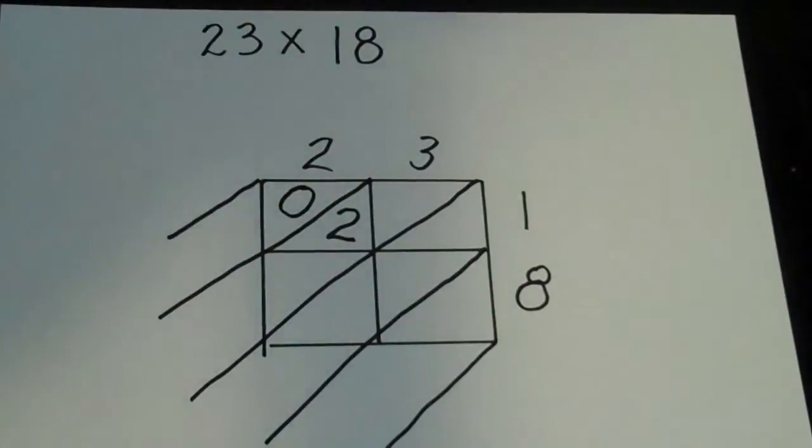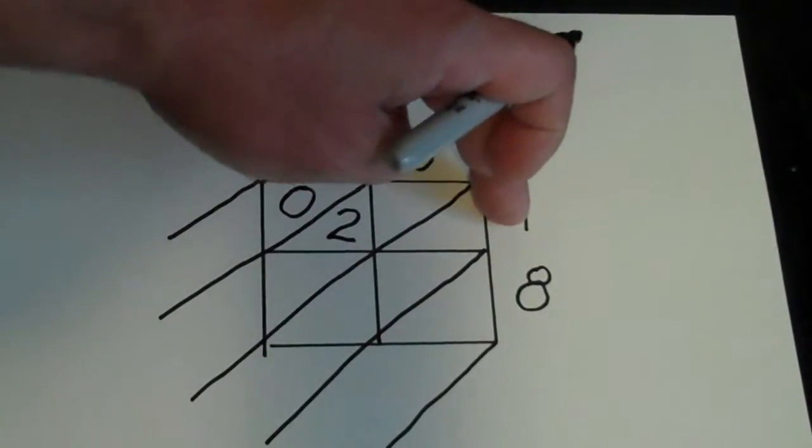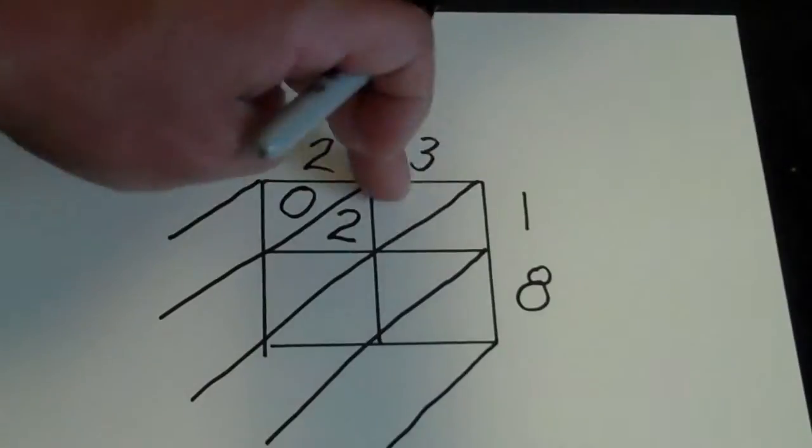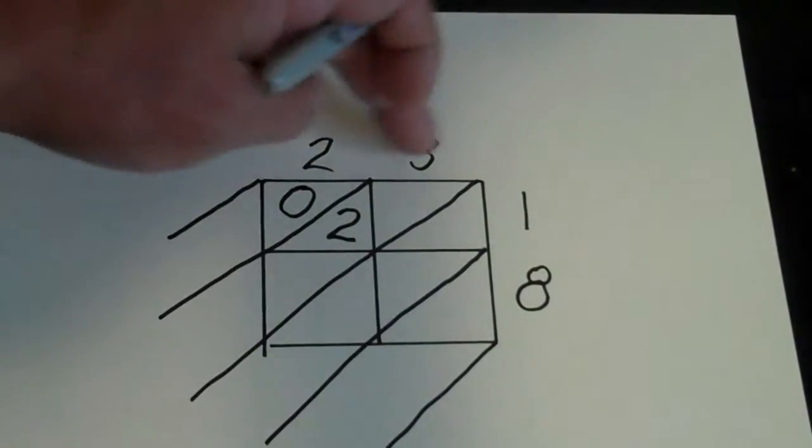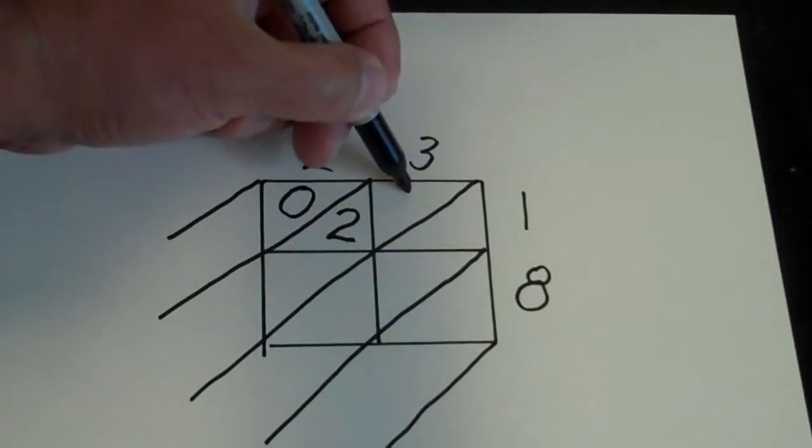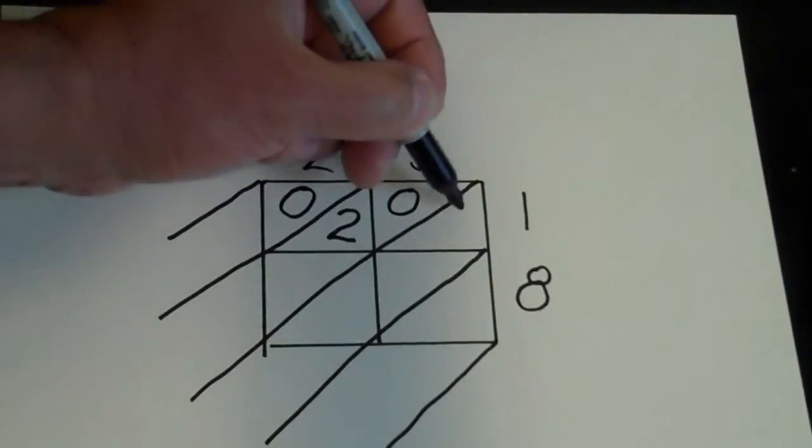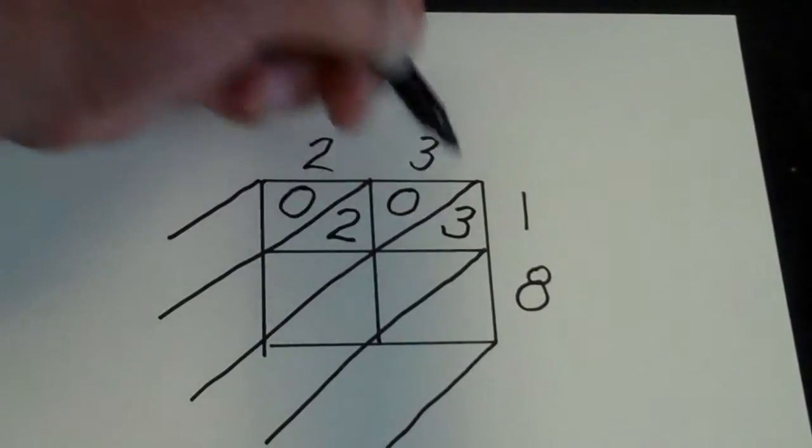It'd be the same thing now for this 3 times 1. 3 times 1, and my answer will go right in these two triangles. So 3 times 1 is 3, so I'll put a 0 and a 3 there, kind of like when you write 2003, it'd be 0, 3.